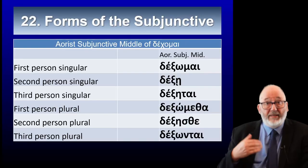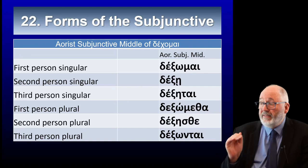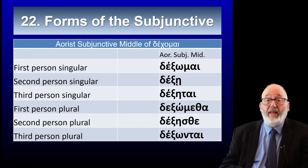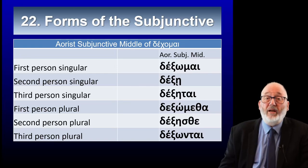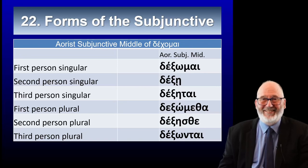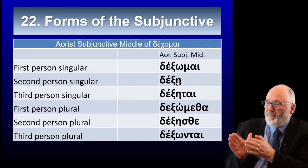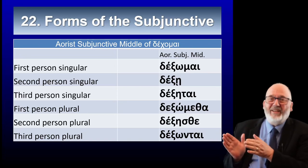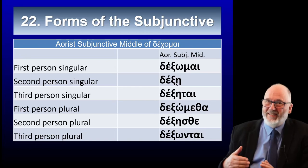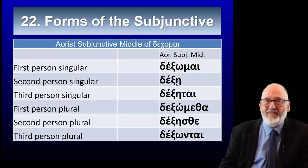What about the aorist of middle verbs? The sigma adds to the chi of dechomai to make dexomai — dexēi, dexētai, etc. We've just reused the endings of the present middle subjunctive. It's harder to say than to actually see — if you look at it, you can see the sigma being used, and then the endings of the present subjunctive. It's doing exactly what the active voice does to form its aorist subjunctive. So that's another bit of good news.